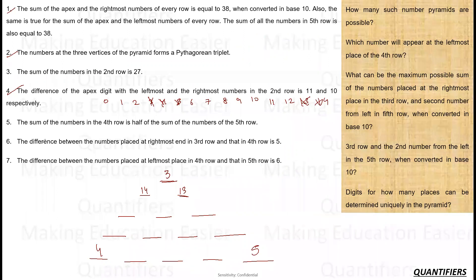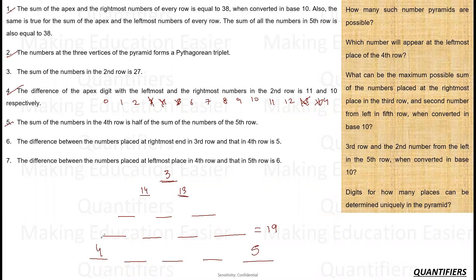The sum of numbers in the fourth row is half the sum of the fifth row, so the fourth row sums to 19. Given the sum of the rightmost column is 38: 4 + 14 + 3 = 21, so the two remaining rightmost values in rows 3 and 4 must add to 17. Similarly, 3 + 13 + 5 = 21 on the left, so the leftmost values in rows 3 and 4 must also sum to 17.